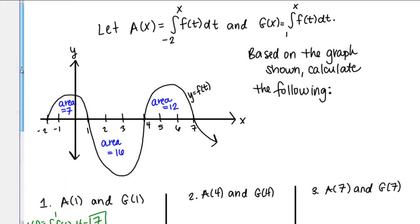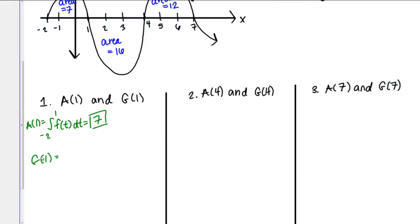G of 1, the function G of X is given by the integral from 1 to X of F of T DT. G of 1 means I'm going to plug in 1 for X. Then that's going to be the integral from 1 to 1 of F of T DT. What does that equal?